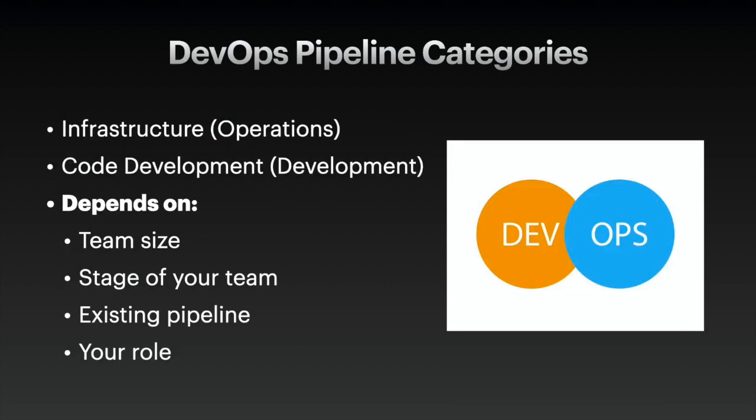DevOps pipeline can be largely broken down into two aspects: infrastructure/operation and code development. Which role you belong to depends on a number of different factors, including the existing DevOps pipeline, the size of your company, your role at your company, etc. For example, if your company is a startup that only has a few engineering team members and no previously designed DevOps pipeline,